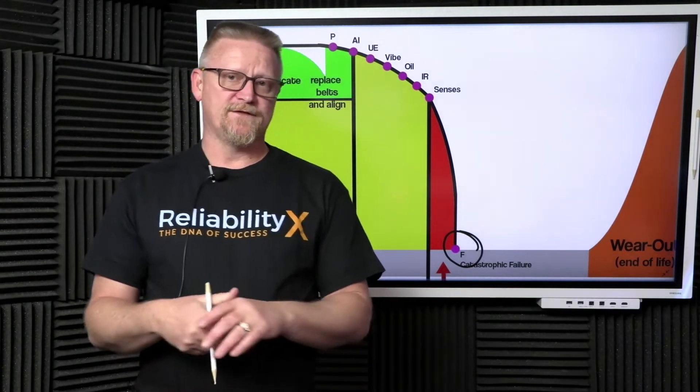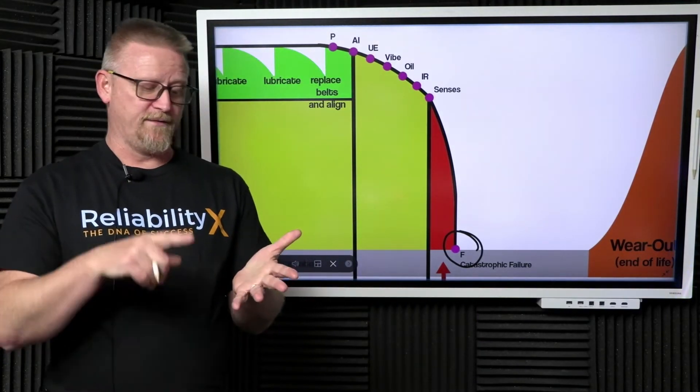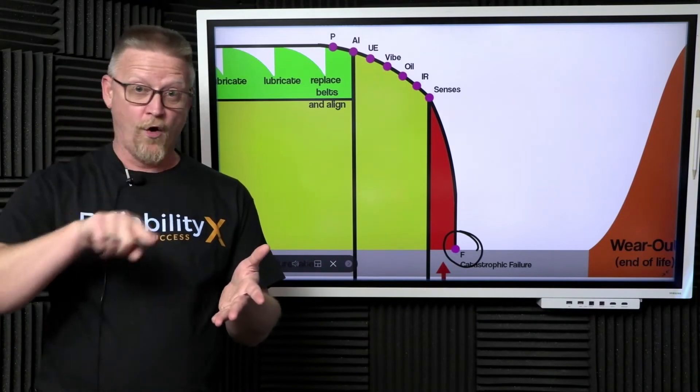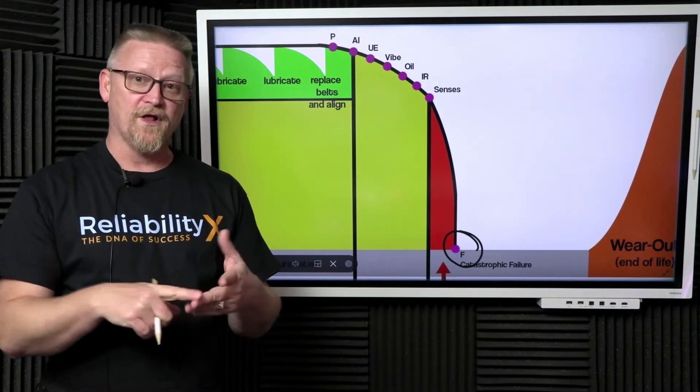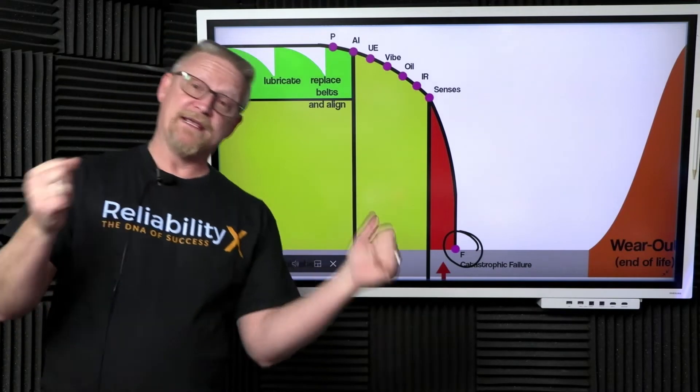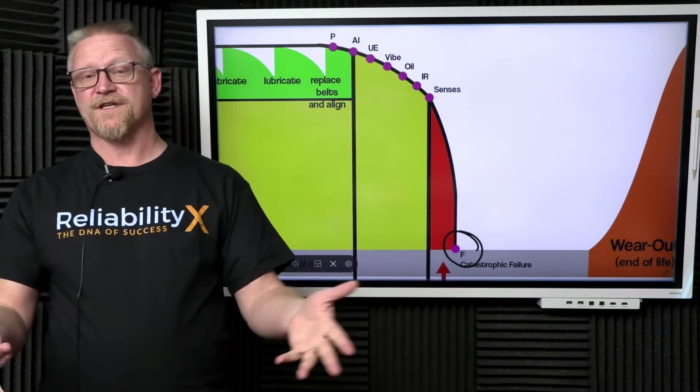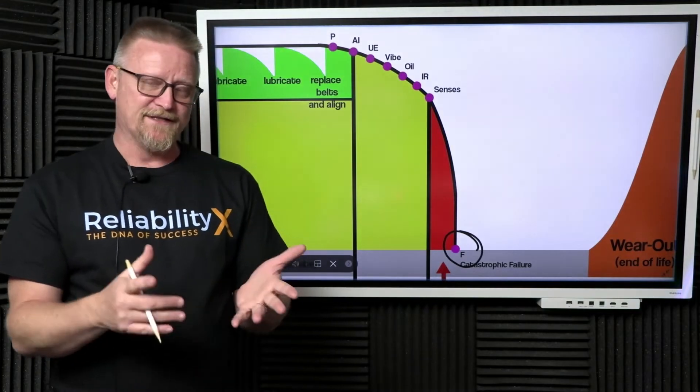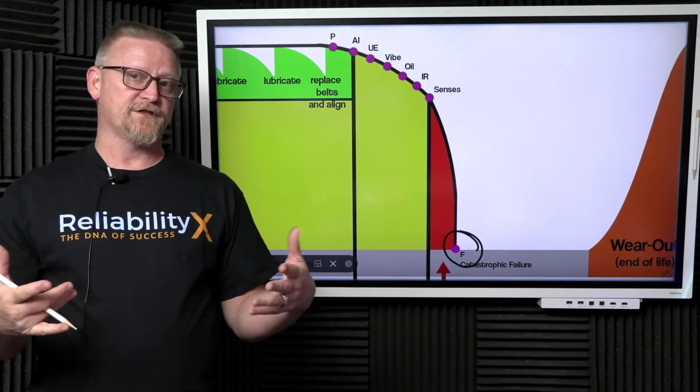In some cases we have blown apart the bearing and dropped the shaft on the pillow block, then made a nice oval in our pillow block and scored the shaft, maybe even bent fins in a fan or something—other damage that is catastrophic.